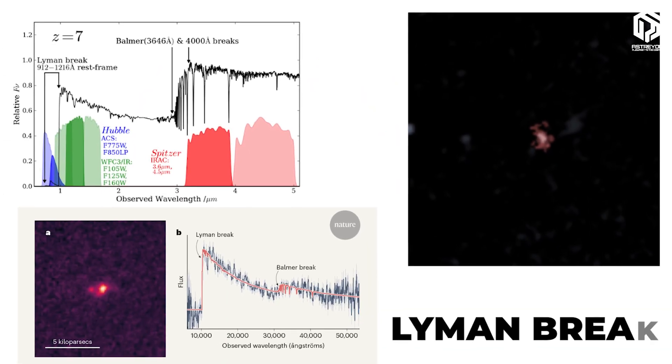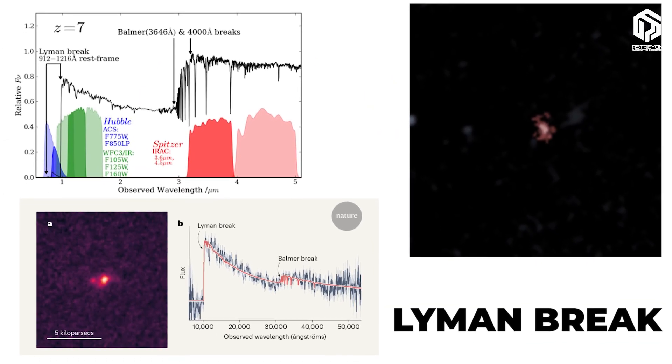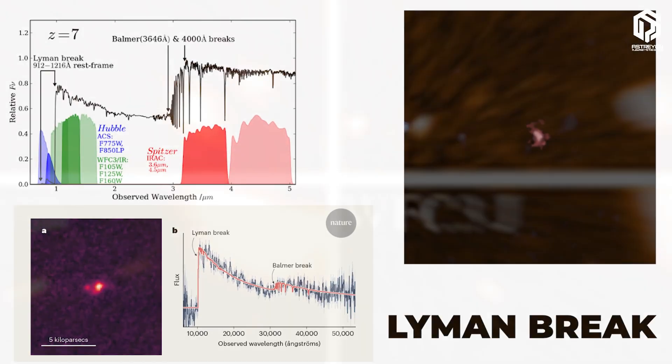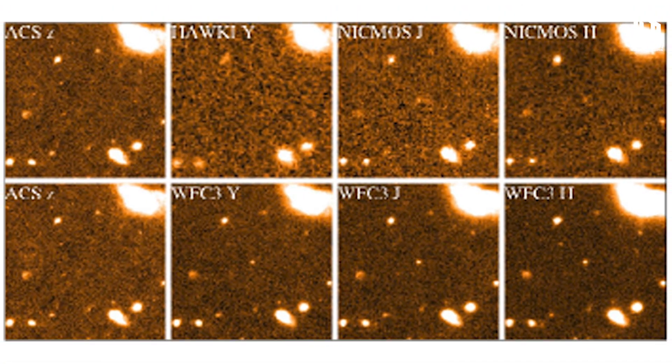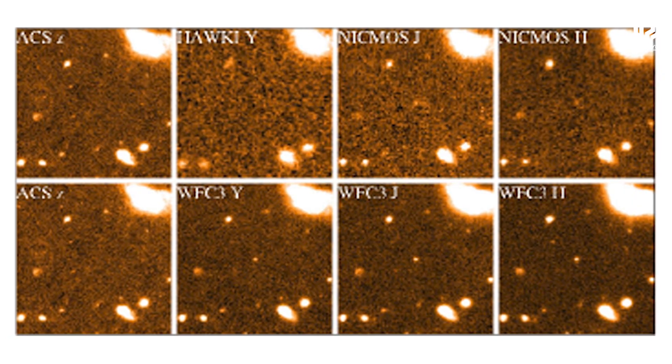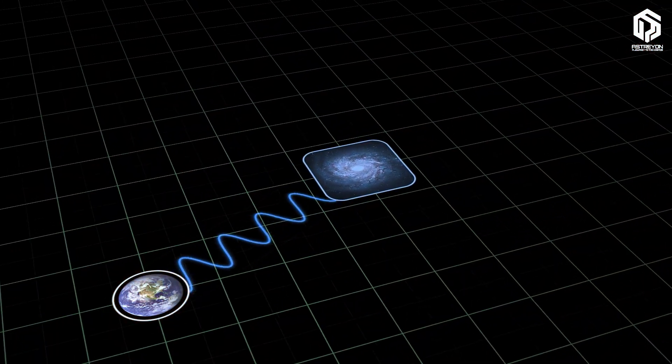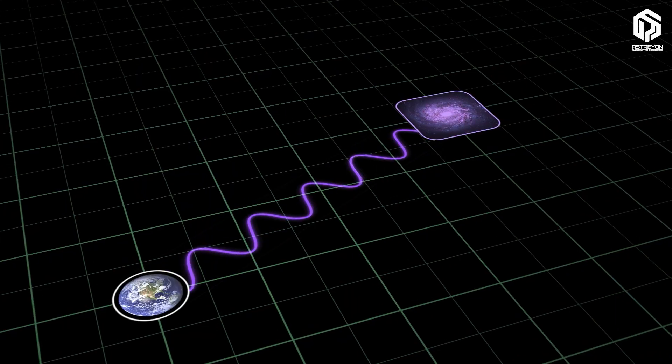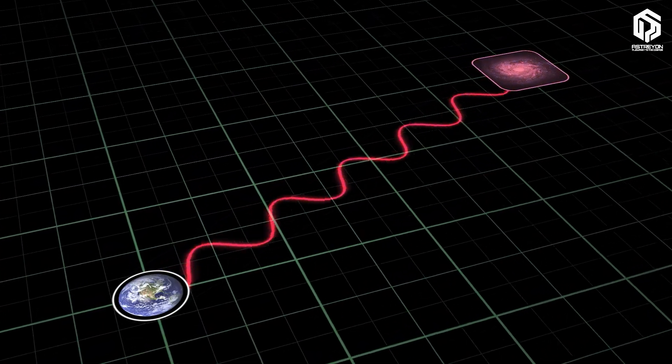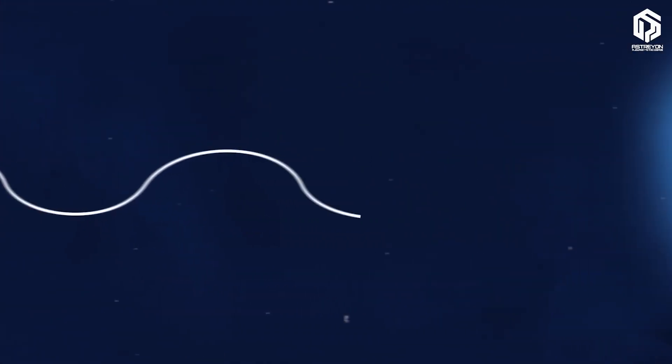This phenomenon is known as the Lyman Break, where neutral hydrogen in the early universe absorbs ultraviolet light, like an invisible wall swallowing the light. Then, with spectroscopy, the precise redshift is calculated and the galaxy's age is determined.